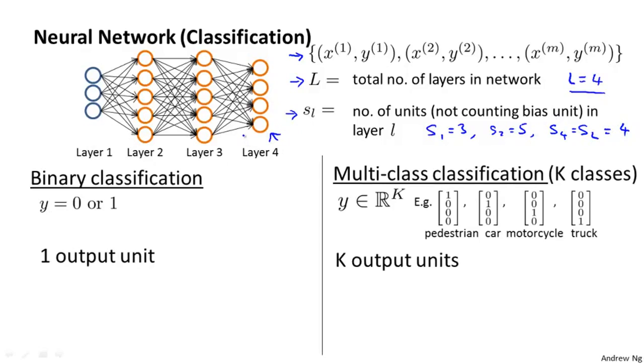We're going to consider two types of classification problems. The first is binary classification, where the labels y are either 0 or 1. In this case, we would have one output unit. So this neural network on top has 4 output units, but if we had binary classification, we would have only one output unit that computes h(x).